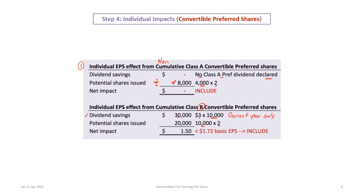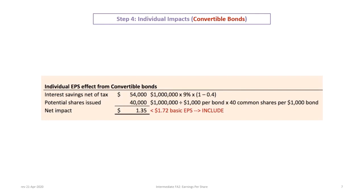To determine whether to include the Class B preferred shares in diluted EPS, we compare the $1.50 individual impact to the basic EPS of $1.72. Since $1.50 is less than $1.72, it is dilutive and we include it. Anything greater than $1.72 would be anti-dilutive. Both classes of preferred shares will be included — Class A because it automatically dilutes shares with no earnings impact, and Class B because its per-share individual impact is less than basic EPS.